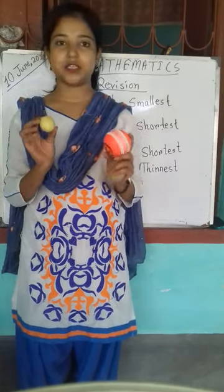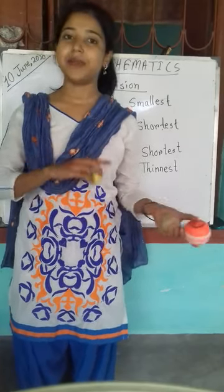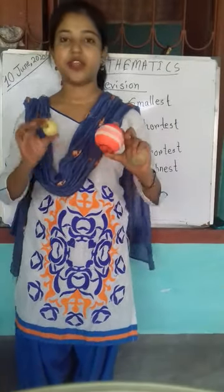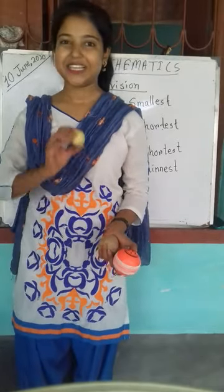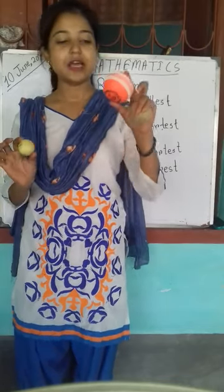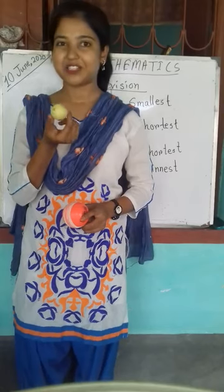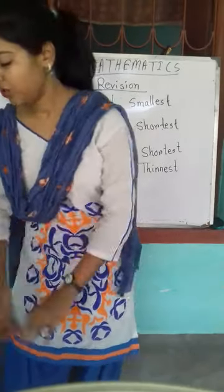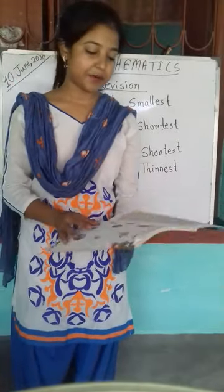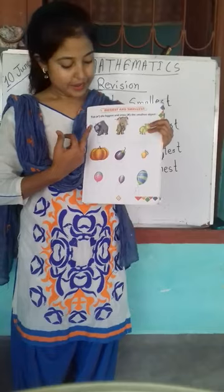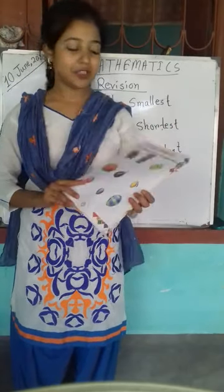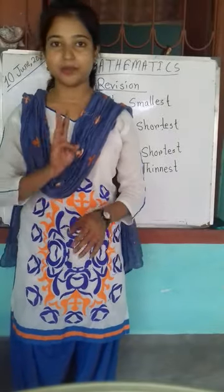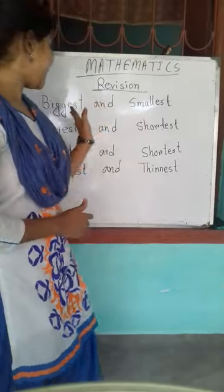Why? Because when there are two objects, you can say big and small. But if there are more than two objects, then you have to say biggest and smallest. So here, the ball is biggest and the green tomato is smallest. In your book, there are pictures given — bear, elephant, and hippo. Among these, the elephant is biggest and the hippo is smallest. Because there are more than two objects, that's why we use biggest and smallest — the superlative form.